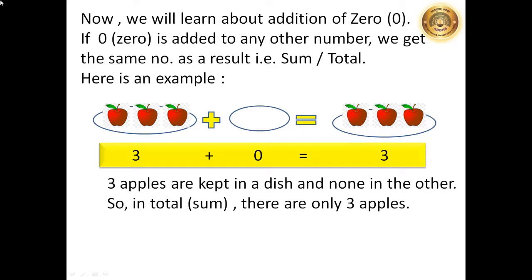Here is an example. Here we have 3 apples in this dish. Plus, this dish is empty. So, in result, we have 3 apples only. So, we understood here is, 3 apples are kept in a dish and none other in the other. So, in total, that is, sum, there are only 3 apples.